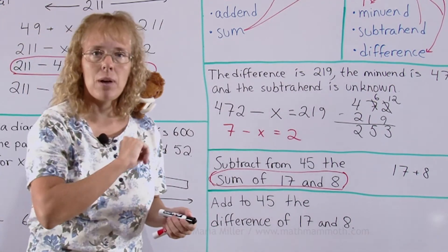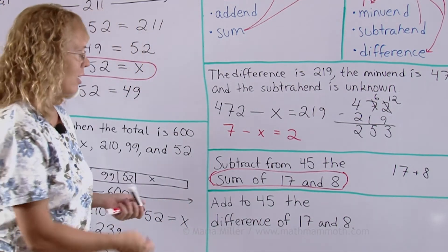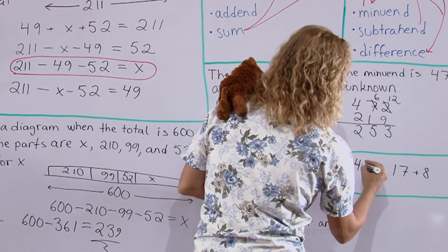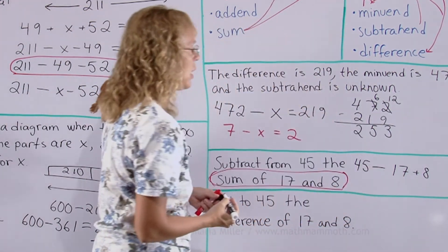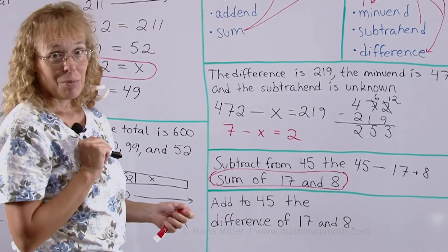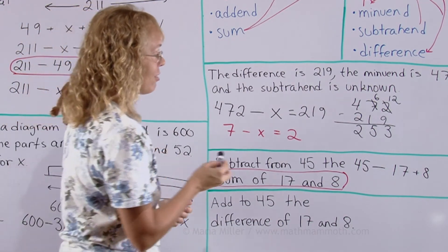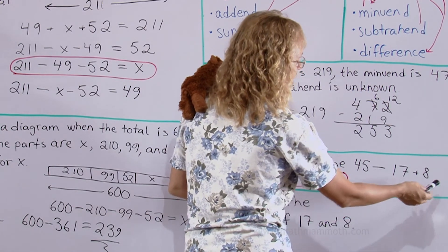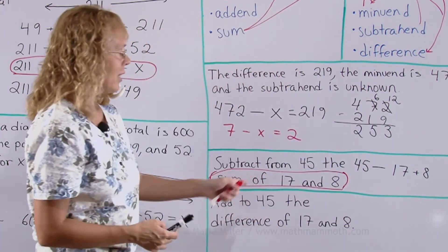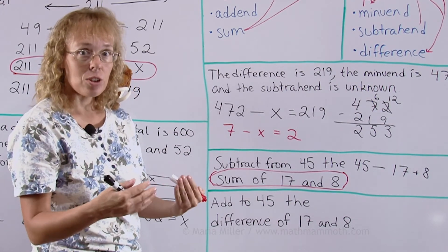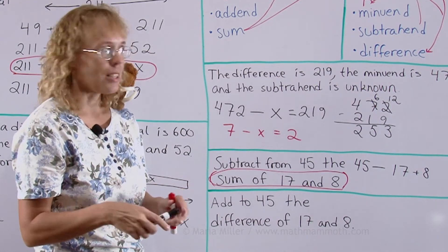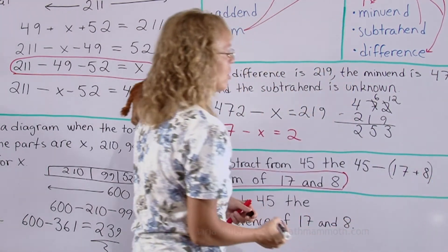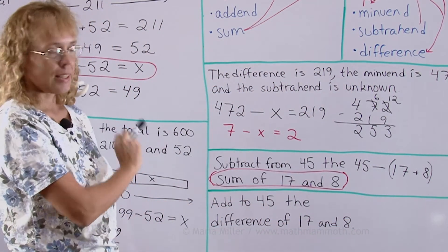But there's one more thing to do here because if I go 45 minus 17 first and then I add 8 to that, that's not what this is meaning. It's meaning that we need to add 17 plus 8 first. So we'll use parentheses to change the order of operations to make sure that the addition is done first. So that's it now.